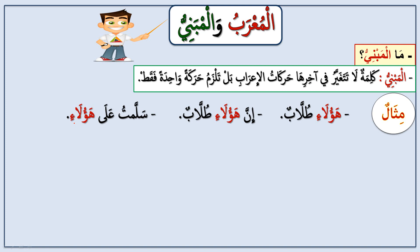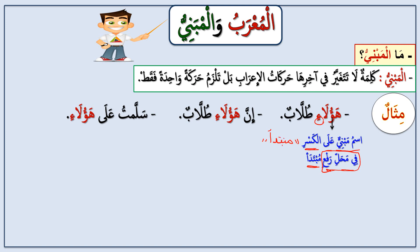When making i'rab for a mabni word, I have to first say this is ismun mabni — the haraka doesn't change in its end — then mention what haraka it takes in the end, for example al-kasr. Then I say fee mahalli rafi' — its position here is rafa', for example as mubtada'. You can say it's mu'rab and then mention its position, that's also acceptable.